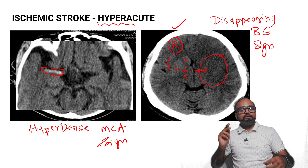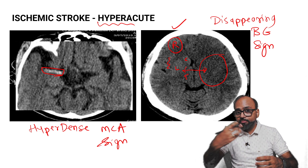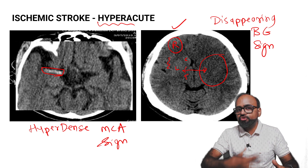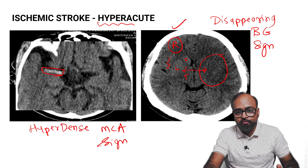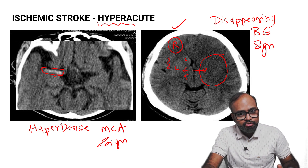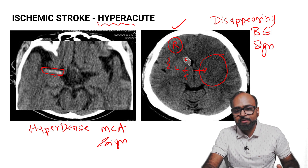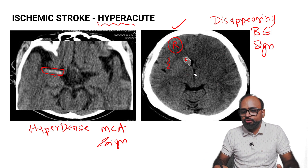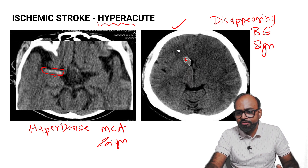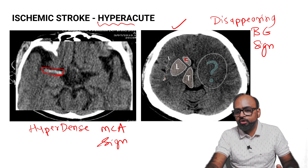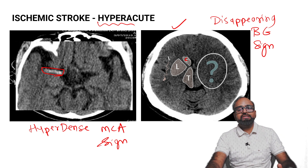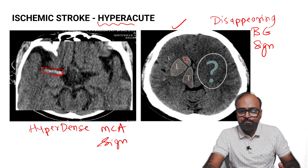The disappearing basal ganglia sign becomes visible as you approach around four to six hours on CT scan — that is the classic appearance. Looking at the graphics, you are able to see the caudate nucleus, thalamus, lentiform nucleus, and insular cortex on the right, but they are not seen on the left side. This is called the disappearing basal ganglia sign.